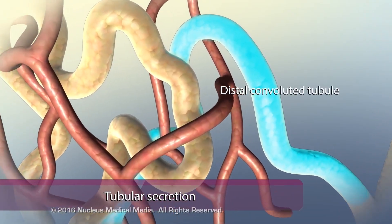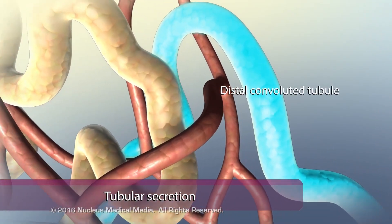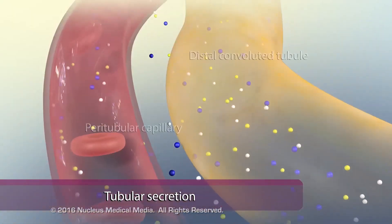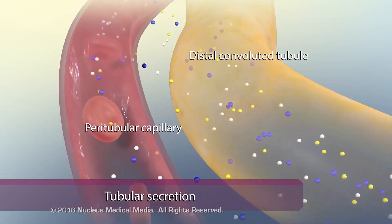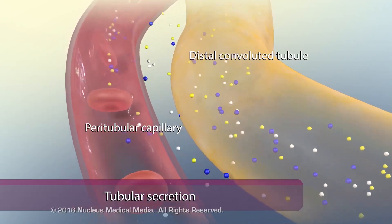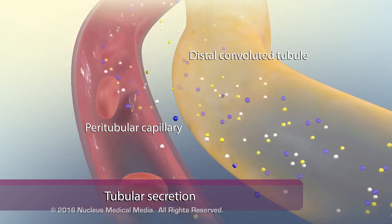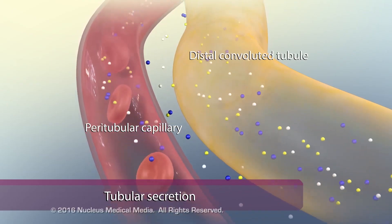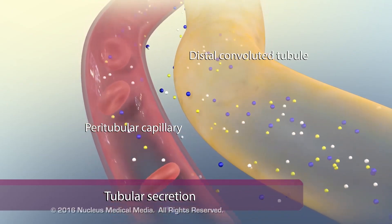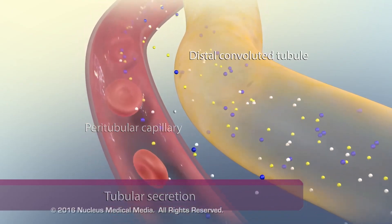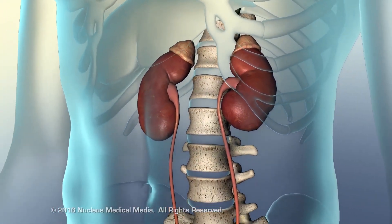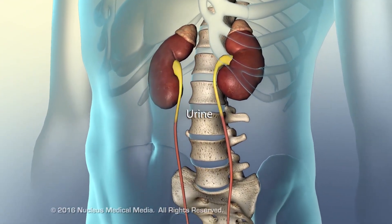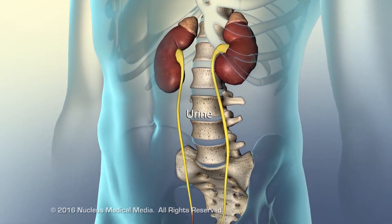The final step of urine production is tubular secretion, which occurs primarily in the distal convoluted tubules. These tubules extract larger nitrogenous wastes, excess hydrogen ions, and excess potassium ions from the peritubular capillaries, and secrete them into the tubular fluid. From here, these wastes will continue through the urinary system until they pass out of the body in urine.